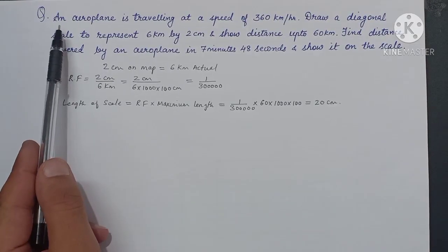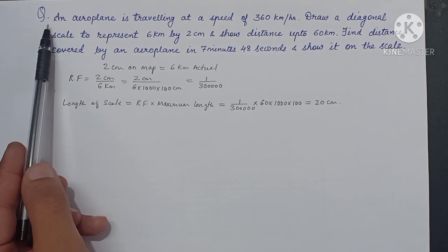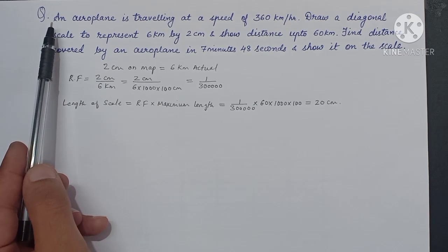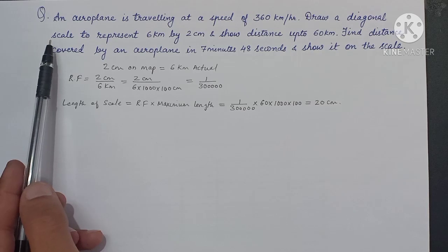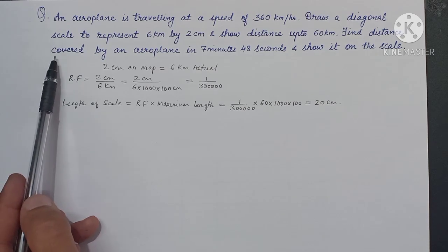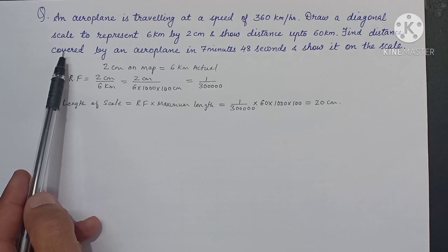Let's take another question for diagonal scale. An aeroplane is traveling at a speed of 360 kilometer per hour. Draw a diagonal scale to represent 6 kilometer by 2 centimeter and show distance up to 60 kilometer. Find the distance covered by the aeroplane in 7 minutes 48 seconds and show it on the scale.